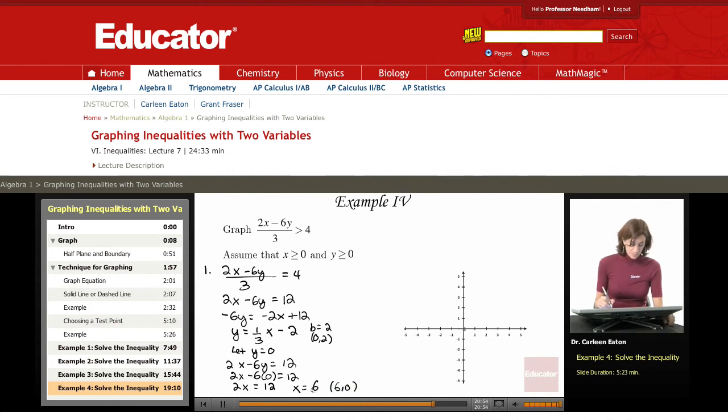So I have my two points. 0, 2. Excuse me. 0, negative 2. And 6, 0. So that's my y-intercept and my x-intercept.